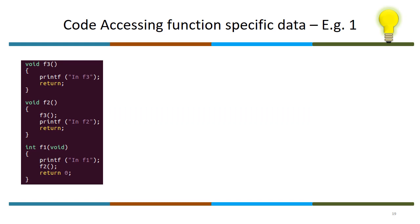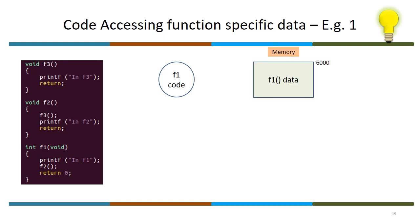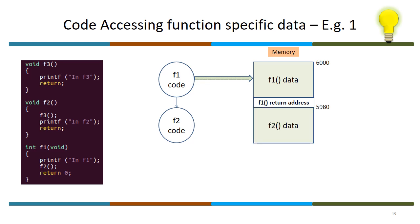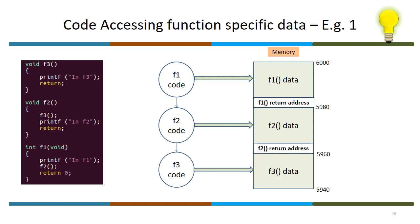How does the compiler generate an address for the dynamically associated symbols — the memory addresses dynamically associated to local symbols? For accessing function-specific data, example one: F1 invoking F2, F2 invoking F3, and F3 returning back. When the invocation starts, F1-specific data is allocated. F1 accesses the code, and prior to invocation of F2, F1 stores the return address in its stack frame.